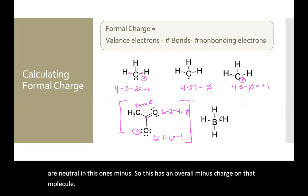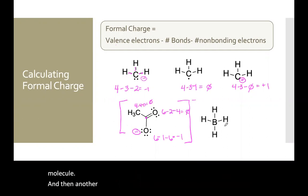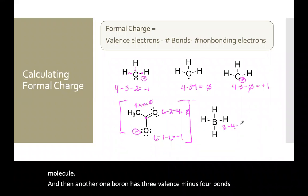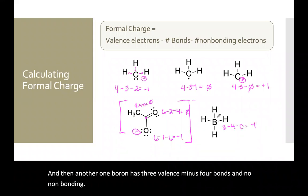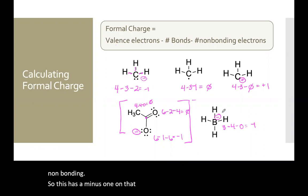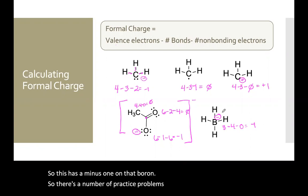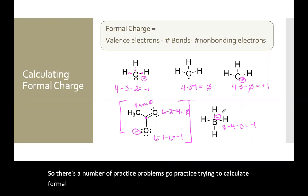Boron has three valence, minus four bonds, and no non-bonding, so this has a minus one on that boron. There are a number of practice problems — go practice trying to calculate formal charge on each of the atoms in each of the molecules given.